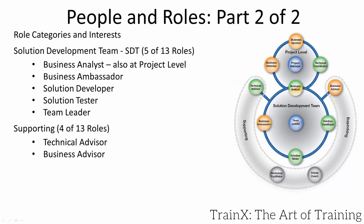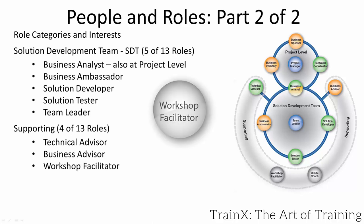Our case study will have only one solution development team. A building restoration project might have three teams — builders, plumbers and electricians — each with its own set of SDT roles, so three team leaders and so on. The project manager ensures their activities are sequenced at a high level so two teams are not in the same space simultaneously. Lower-level coordination is done by each team for itself. Self-organised and empowered teams are key in Agile PM.